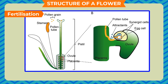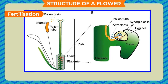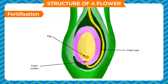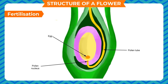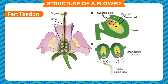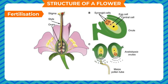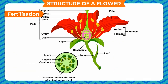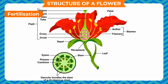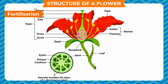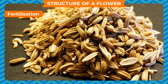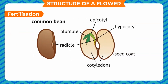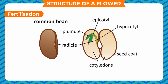Fertilization: A pollen grain on reaching the stigma develops a long tube called the pollen tube, which carries the male gamete through the style and pushes the pollen grain into the ovary. The male and female gametes fuse in the ovary to form the egg or zygote. This process is called fertilization. After fertilization, the ovary grows into a fruit and other parts of the flower fall off. The fruit is the ripened ovary, whereas the seed is a mature ovule after fertilization. The seed contains an embryo enclosed in a seed coat.